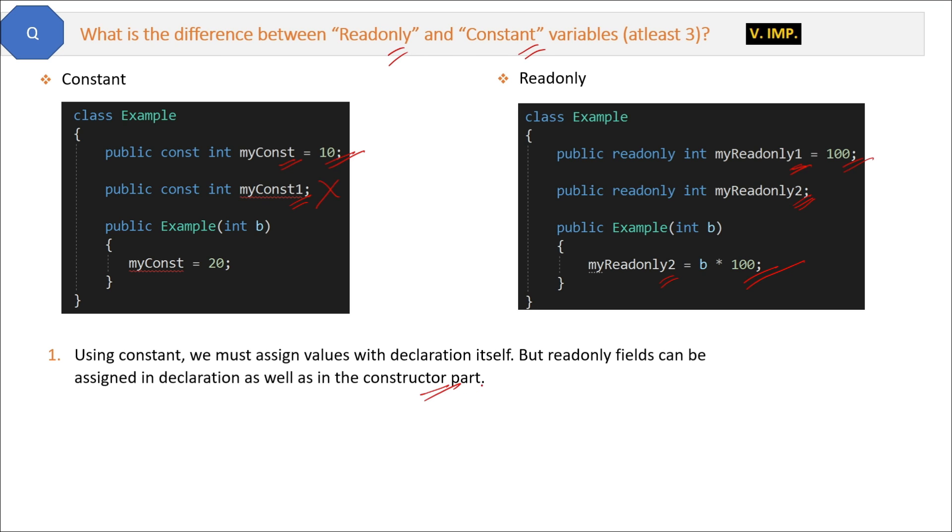Second difference is: constant field values cannot be changed, but readonly field values can be changed. Now myConst value is assigned as it is initialized, now you can never change this value. But you can change the readonly field value inside the constructor. So this is the second difference.